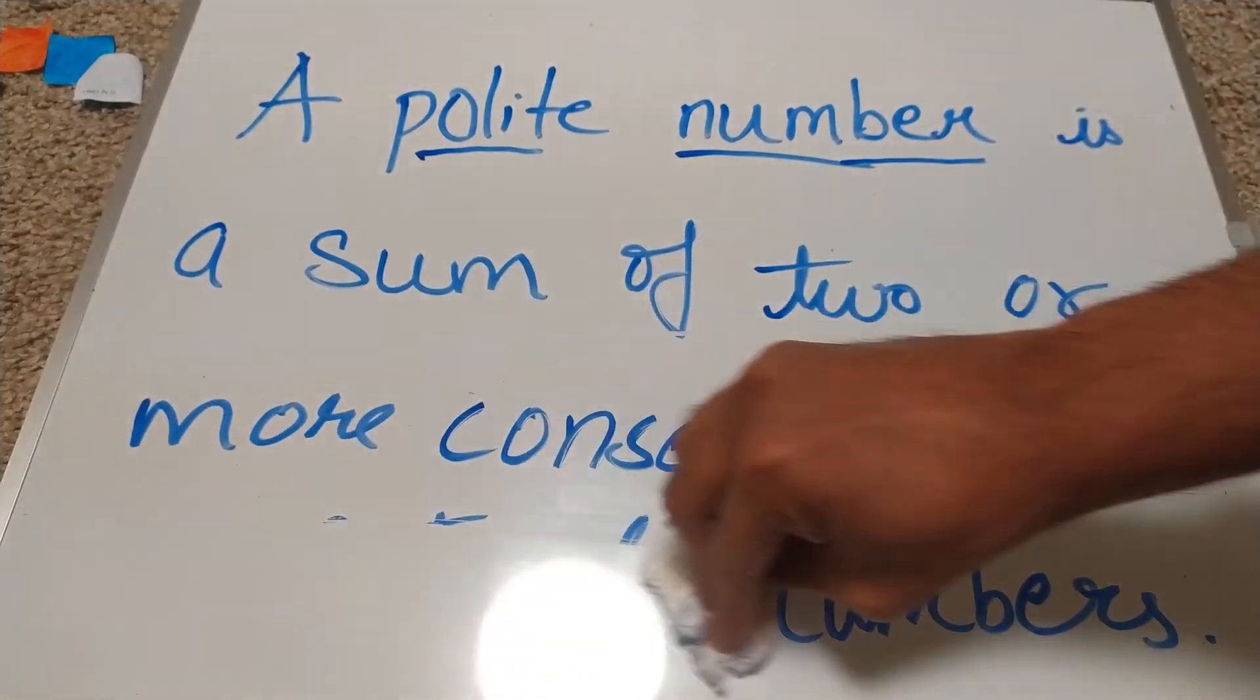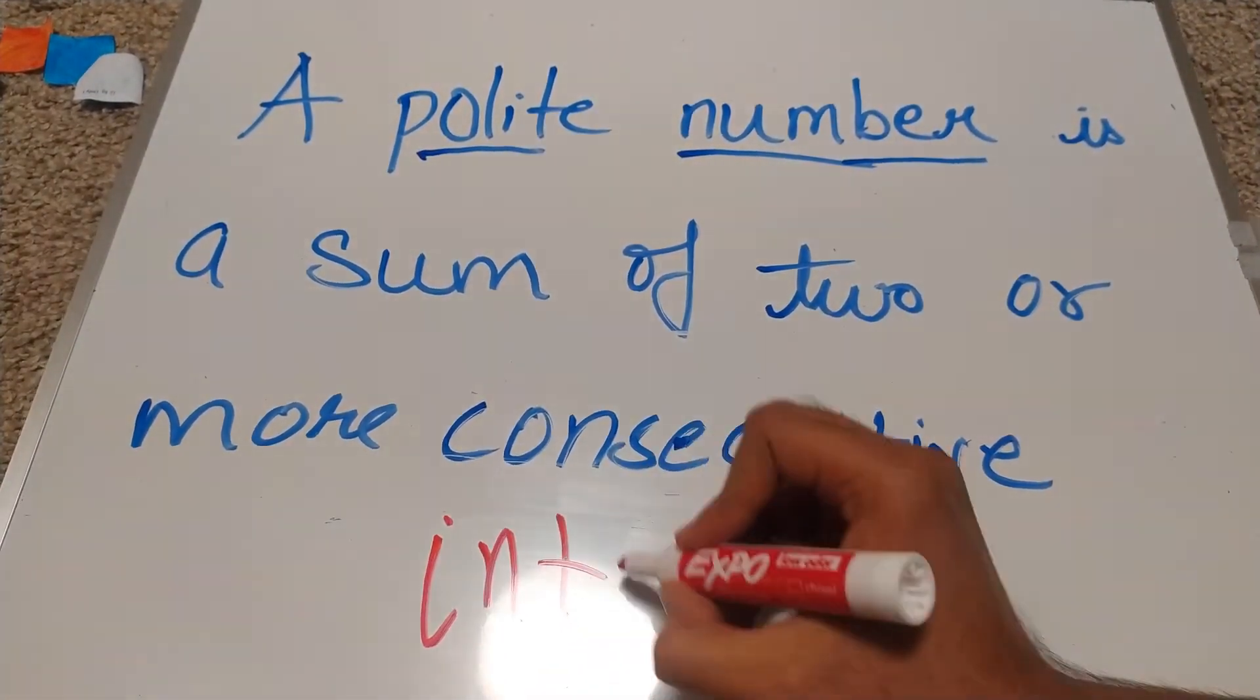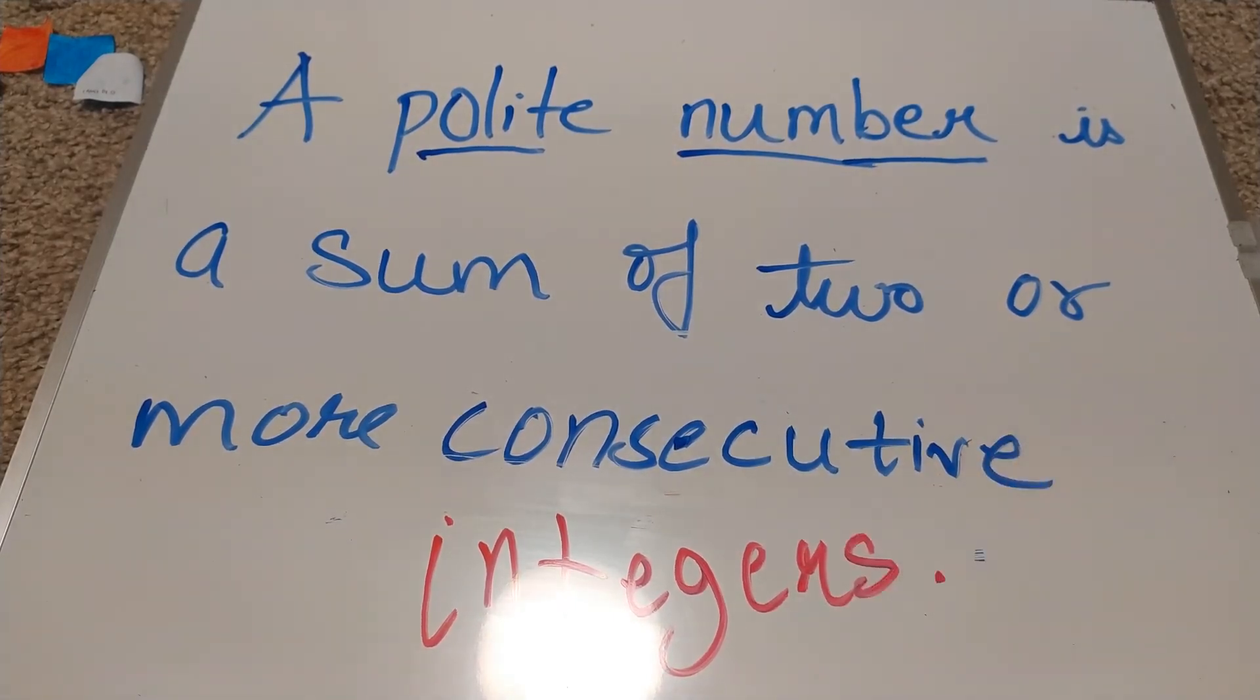Fact number two. We can think of polite numbers as being sums of consecutive integers instead of just natural numbers. I'll let you think about this one and put the answer in the description.